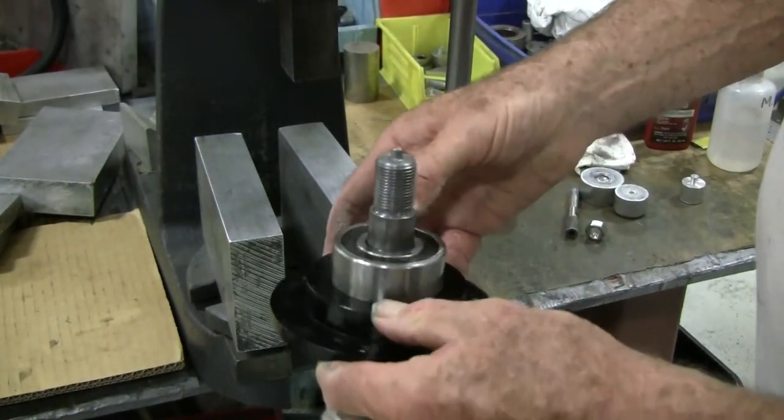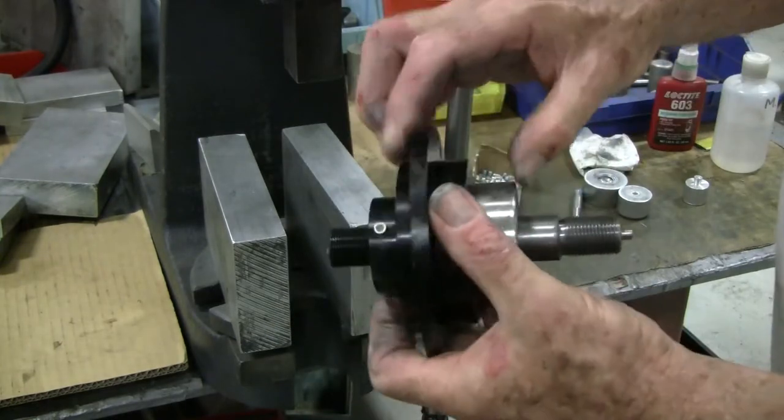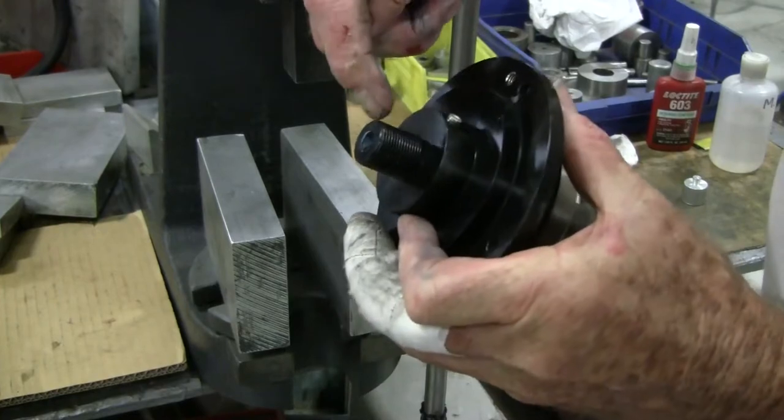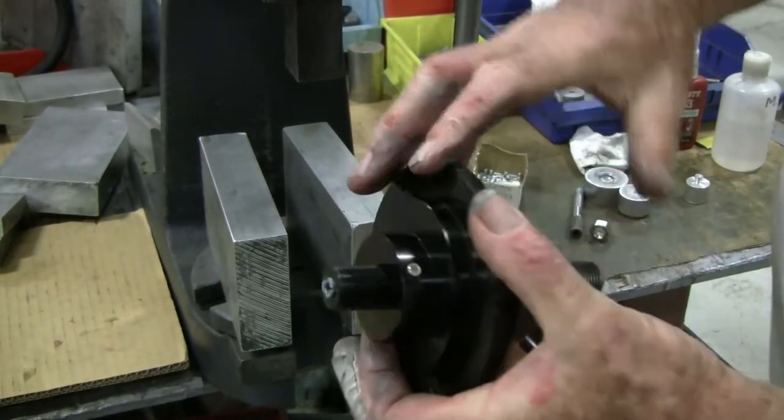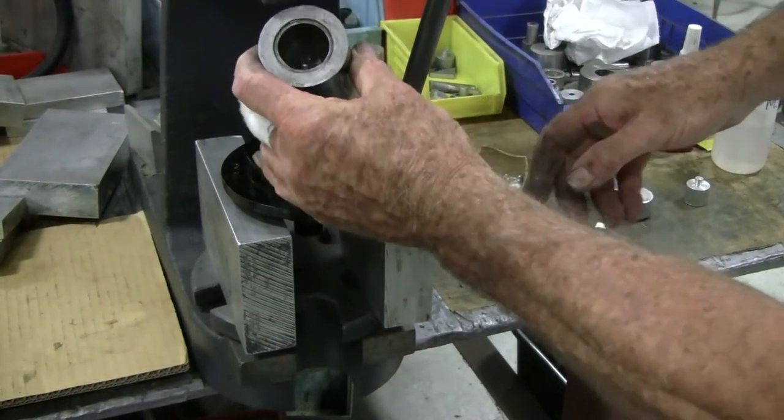When replacing bearings on benchmark wire line equipment, always make sure to align the lubrication hole on the outer race of the bearing with the external grease fitting. You will now press the bearing with the shaft in it into the hub.